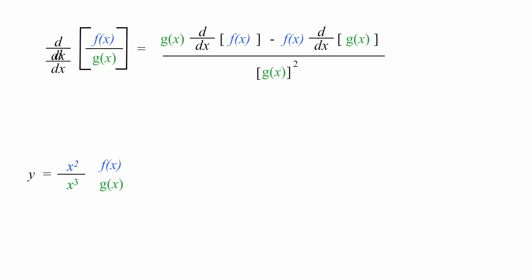Let me begin. I'm going to drop down this d divided by dx and bring down the brackets as well. I'll put the equation in there, x squared divided by x cubed. This is equal to x cubed times the derivative of x squared minus x squared times the derivative of x cubed, all of this divided by x cubed squared.